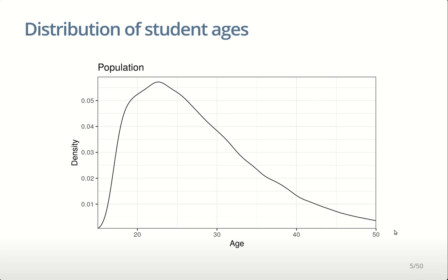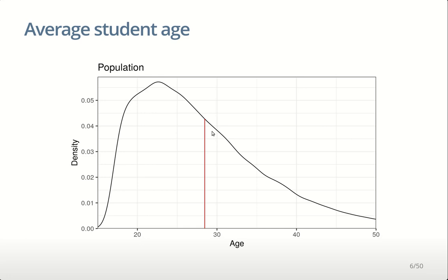Perhaps we might want to estimate the average student age. If we collected the entire population — which for students at Massey University is relatively easy since everyone's got a student ID and Massey presumably knows your date of birth — we could find the average age. But of course in many populations that would not be possible. So suppose we want to estimate the average age without measuring the entire population: we take a sample and use it to infer what the population mean might be.